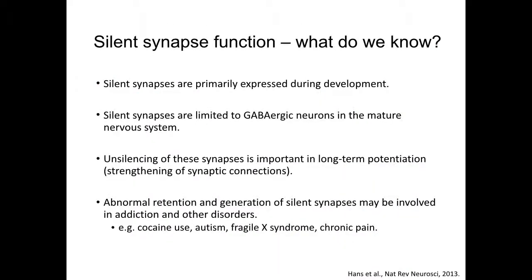So what do we know about silent synapses? We still don't know much about their role in physiology. They are mainly expressed during development and are limited to GABAergic neurons in the mature nervous system. Unsilencing of these synapses plays an important role in long-term potentiation. Abnormal retention and generation of silent synapses is thought to be involved in addiction and other neurological disorders such as autism, fragile X syndrome, and chronic pain.